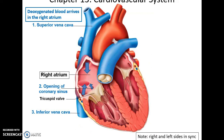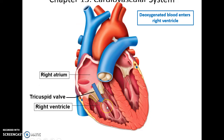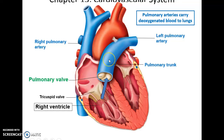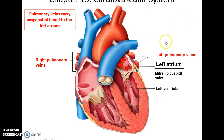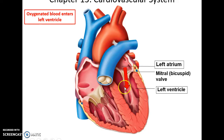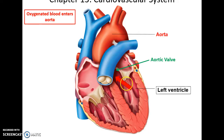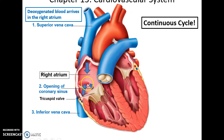Blood arrives from the superior vena cava, the inferior vena cava, and the coronary sinus into the right atrium. The blood passes through the tricuspid valve into the right ventricle. This deoxygenated blood then passes through the pulmonary valve into the pulmonary trunk, which sends blood to the left and right pulmonary arteries going to the lungs to get oxygenated. The oxygenated blood returns via the pulmonary veins into the left atrium, flows through the bicuspid valve into the left ventricle, and then leaves through the aortic valve into the aorta for systemic circulation, eventually returning to the right atrium. This is a continuous cycle.